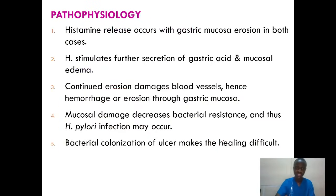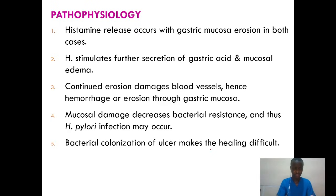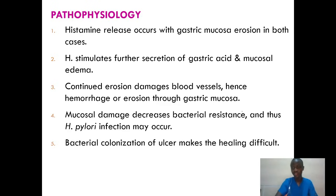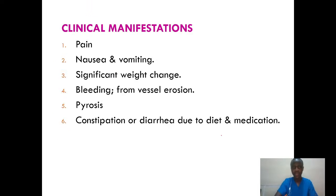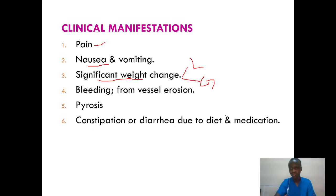Pathophysiology: it's all about histamine release which occurs in the gastric mucosa, bringing about erosion. If the gastric mucosa is not functioning well, there's a higher risk of bacterial colonization of the ulcer, which makes it difficult to heal. Clinical manifestations include pain, nausea and vomiting, significant weight change — remember weight loss versus weight gain depending on the type — bleeding from the vessel that has erosion, pyrosis, and constipation or diarrhea treated with diet and medication.